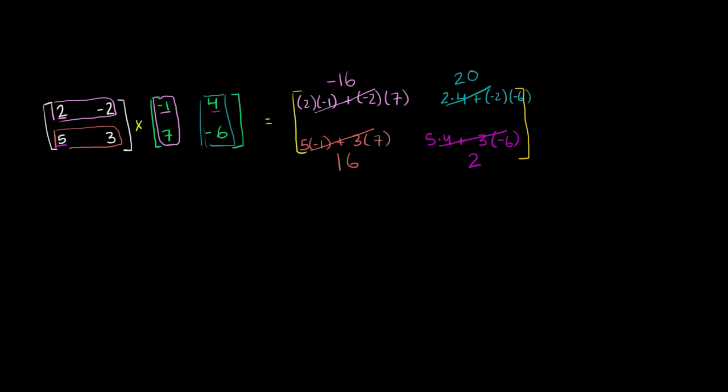So the product of these two matrices, we deserve a little bit of a drum roll at this point. When we multiply this 2 by 2 matrix times this 2 by 2 matrix, we are going to get negative 16, 20, 16, and 2. And we are done.